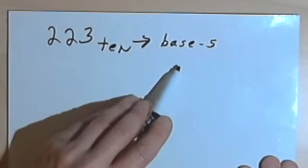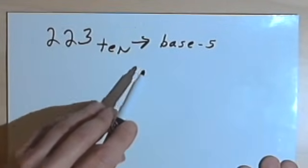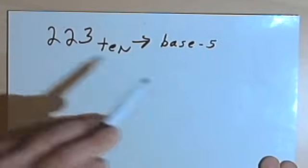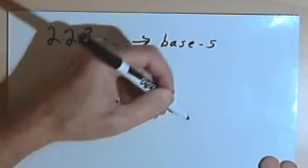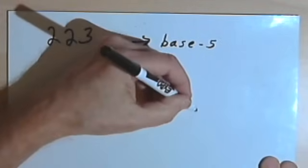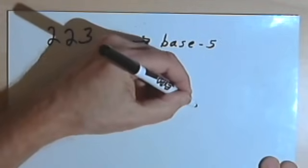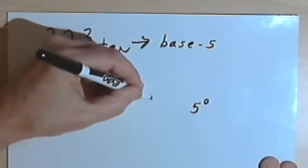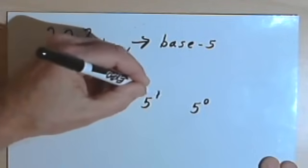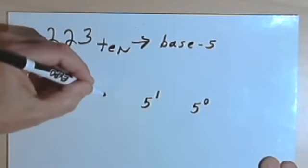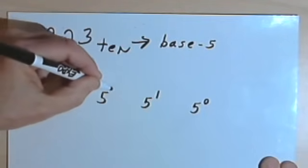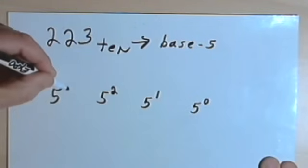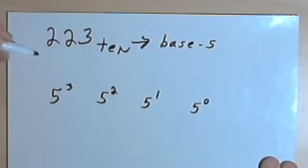One way is kind of similar to what we did when we converted from base 5 into base 10. I'm going to write powers of 5: 5 to the 0, 5 to the 1st, 5 squared, and 5 to the 3rd.